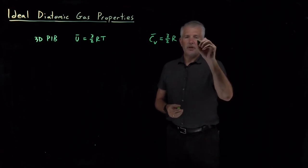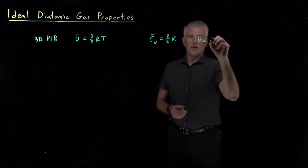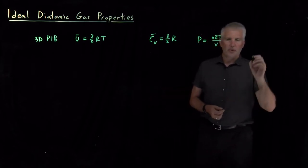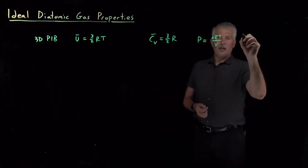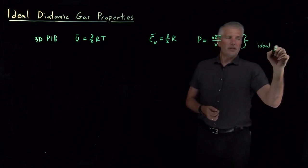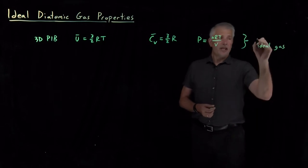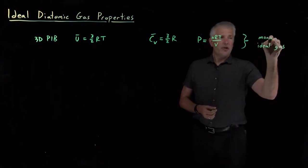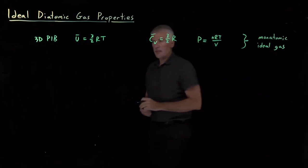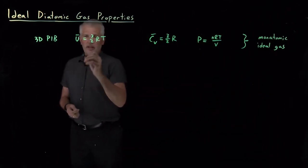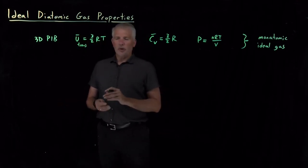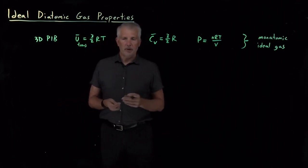And the pressure worked out to be NRT over V. So those are the properties that we found for the 3D particle in a box that we started considering as an ideal gas. We eventually realized that really only described the properties of a monatomic ideal gas because diatomic gases can not only translate, which is what this 3D particle in a box tells us, but also have rotational motion and vibrational motion.